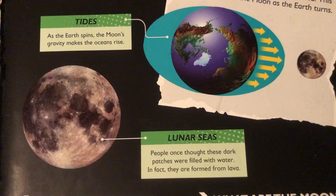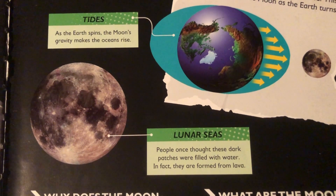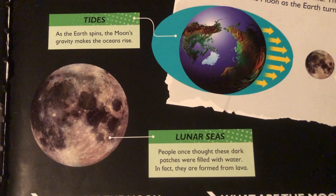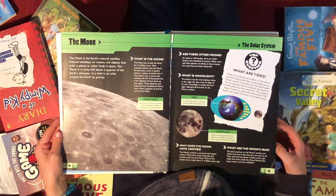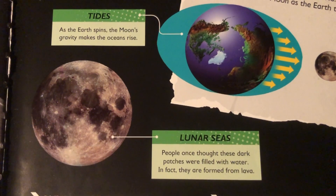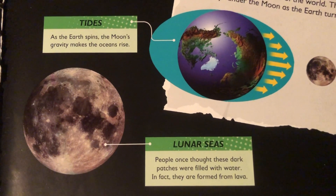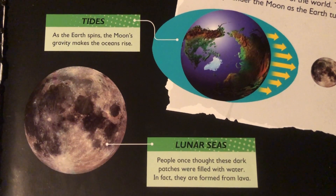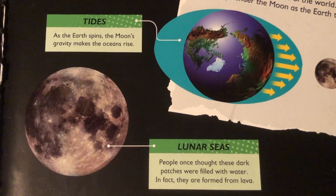Tides. As the Earth spins, the Moon's gravity makes the ocean rise. People once thought the dark patches on the Moon were filled with water. In fact, they are formed from lava.